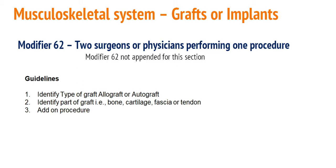To code accurately, the coder has to follow some guidelines. The coder must identify the type of graft — allograft or autograft — then identify the part of the graft, which could be bone, cartilage, fascia, or tendon. The coder must also identify whether the procedure is primary or secondary.